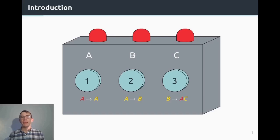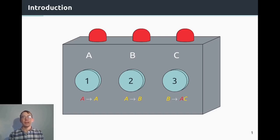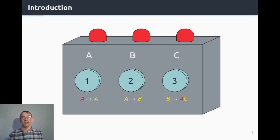This box here has three lights on top of it. They are all turned off at the moment and our goal is to turn them all on. We can do so using the three buttons available here. The first requires that A is turned off and will turn on A when pressed. The second has a precondition that A is already on and will turn on B. The third requires that B is on and will turn on C, but at the same time turn off A.